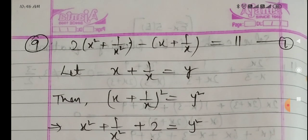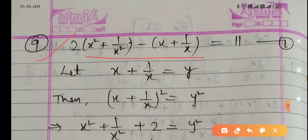Now question number 9. This question is based on the topic equations reducible to quadratic equations, which I told you yesterday. The equation is 2 into (x squared plus 1 upon x squared) minus (x plus 1 upon x) equals 11. Here I am taking x plus 1 upon x as y, and I will find the value of x squared plus 1 upon x squared.